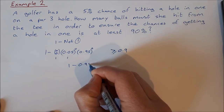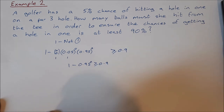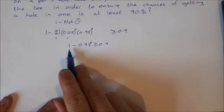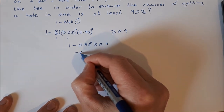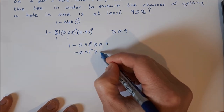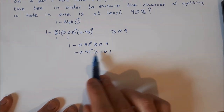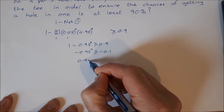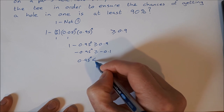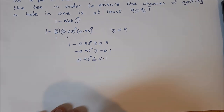So the inequality becomes 1 minus 0.95 to the power of n ≥ 0.9. Subtracting 1 from both sides: minus 0.95^n ≥ minus 0.1. Multiplying both sides by minus 1 — remembering to flip the inequality sign — gives 0.95^n ≤ 0.1.